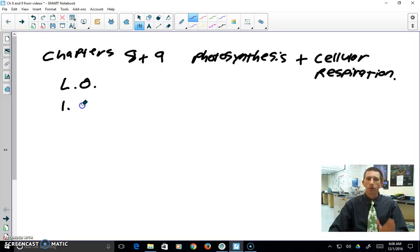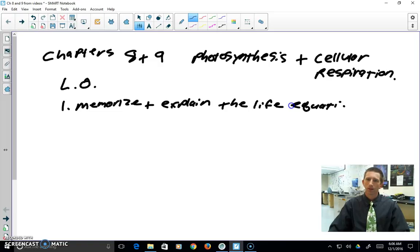So number one, both photosynthesis and cellular respiration are based off of something that I like to call the life equation. So that's something that you need to be able to explain. Well, first you need to memorize it, and then you need to be able to explain the life equation. We'll see as we go on. The reason why I call it the life equation is because all of life is based off of this chemical equation.